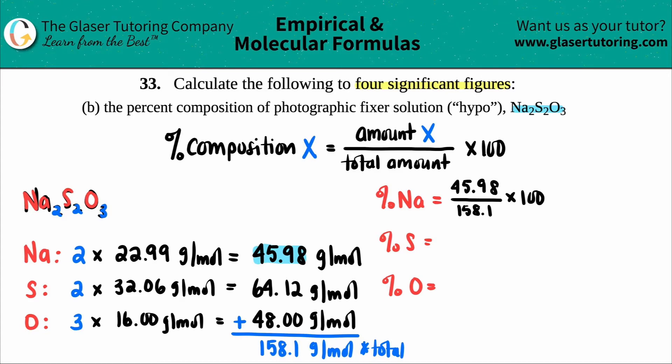Okay. So let's just do it for sulfur. Sulfur's total number is 64.12. So that goes here, 64.12, all over the total amount again, so 158.1. And then I'm just going to multiply by 100. And then for oxygen, the total amount is the 48. So 48.00, all divided by that total molar mass, 158.1, and then times by 100. And maybe I'll just drop this down just so that everything looks better.